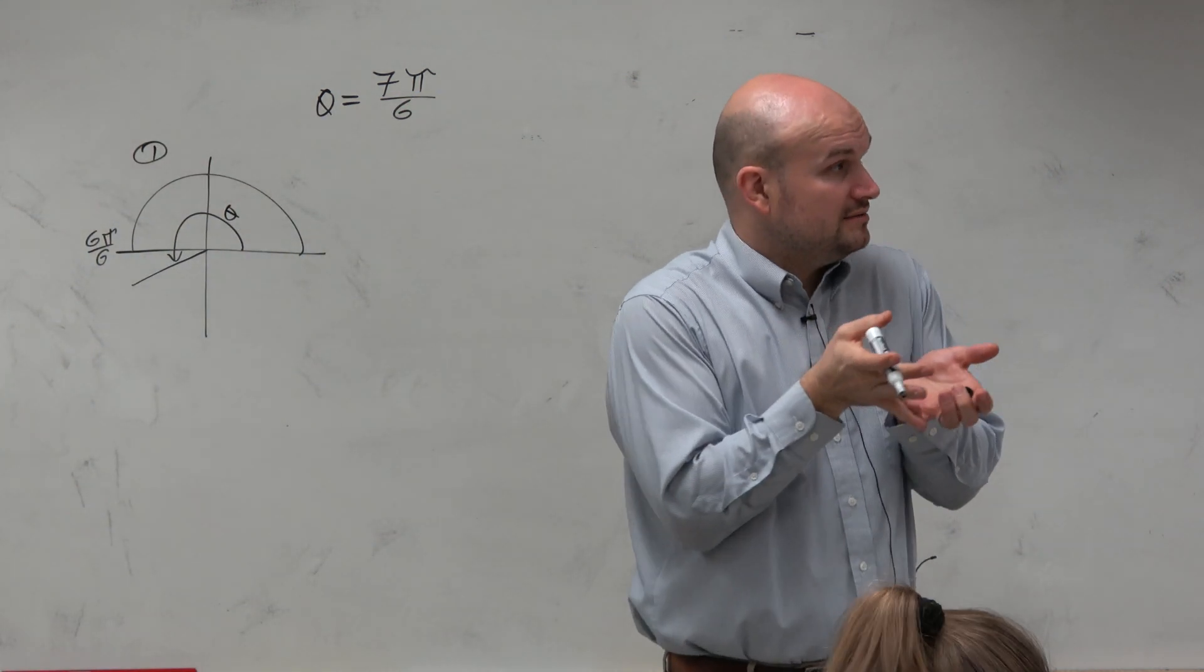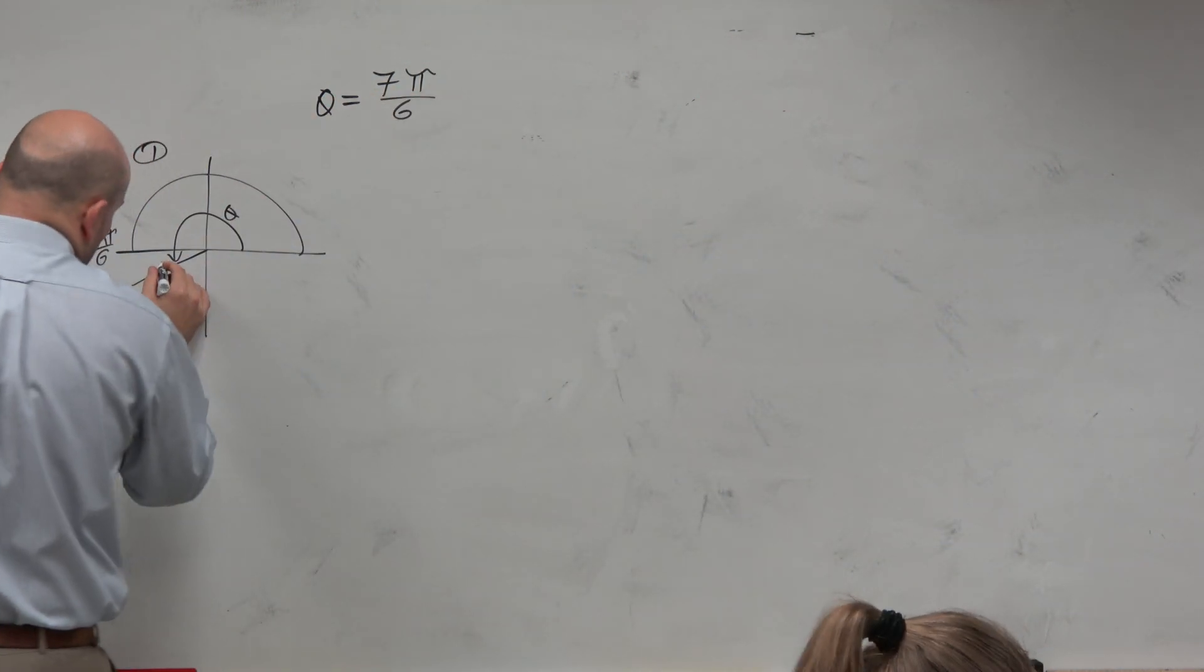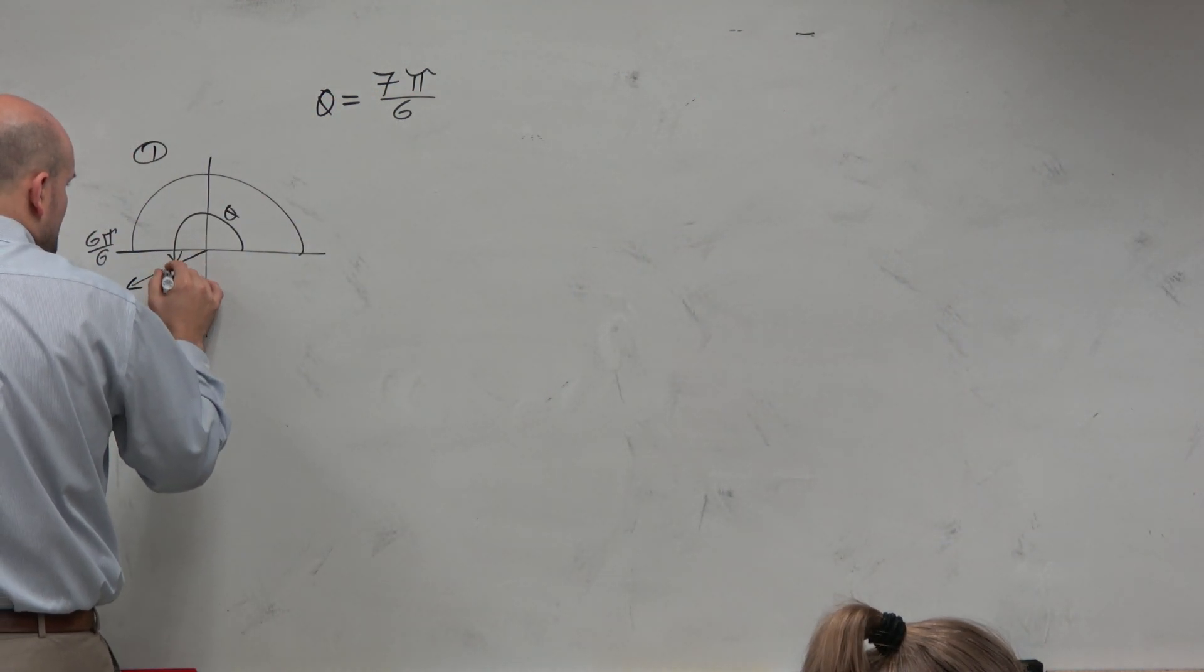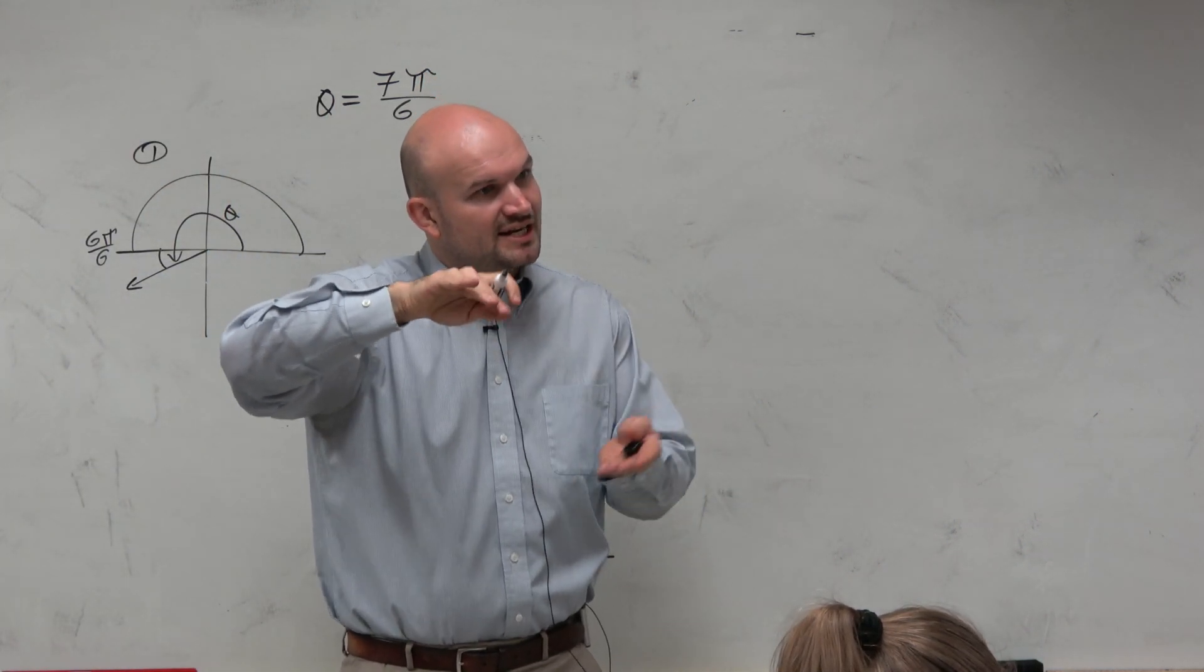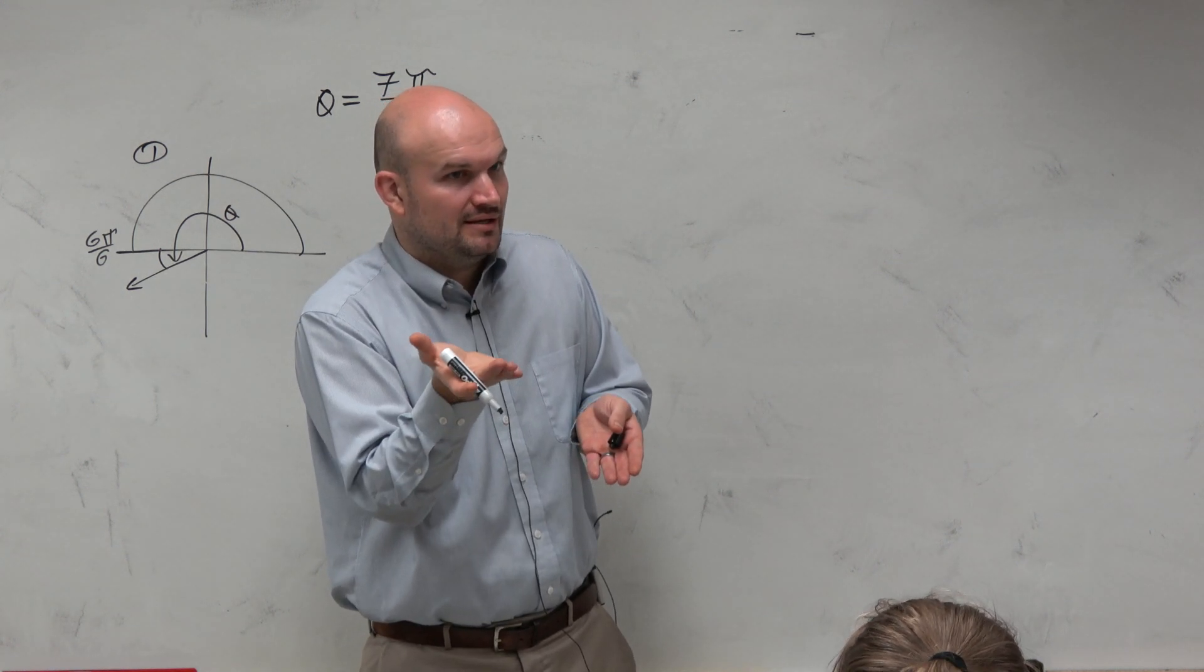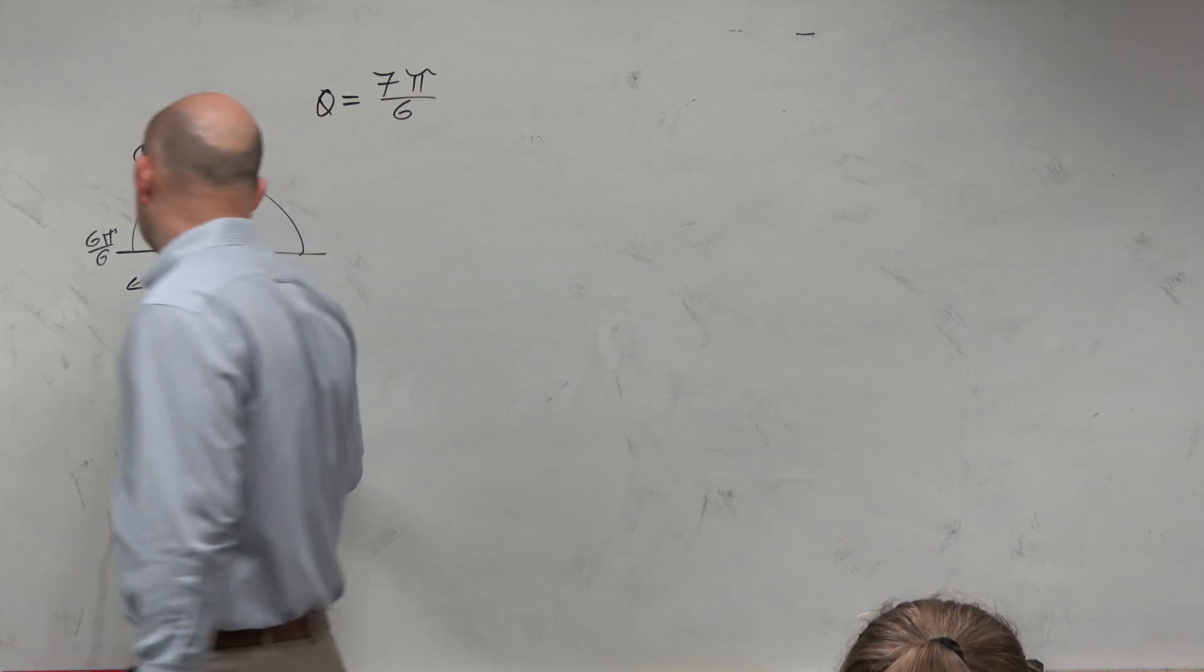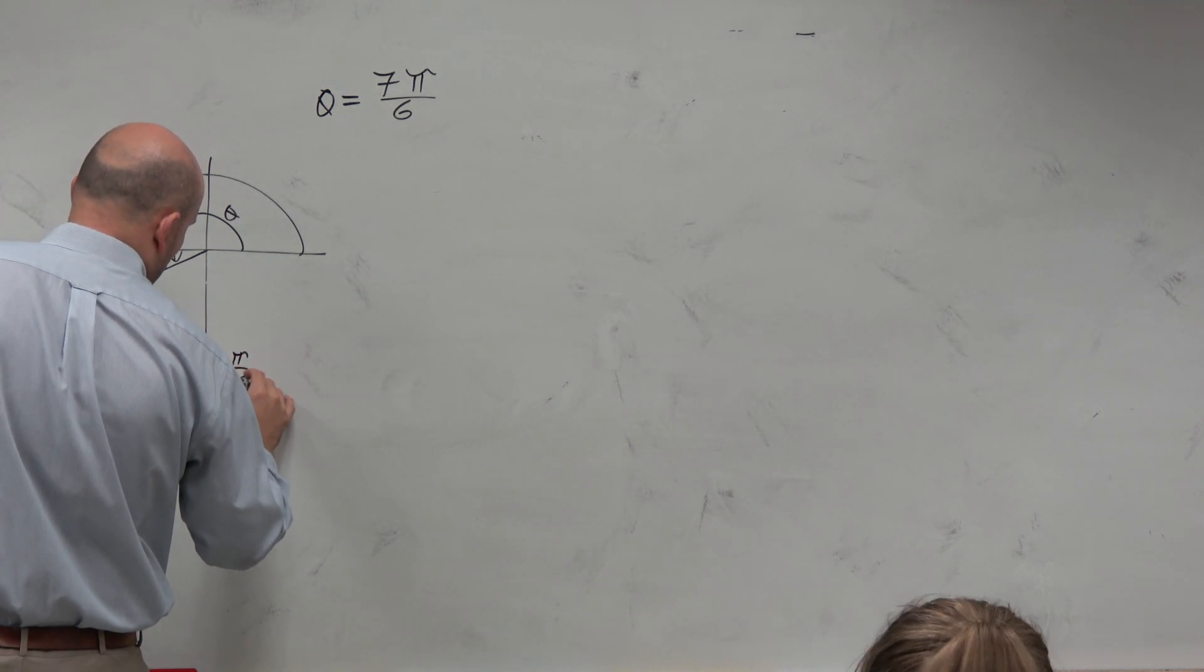Now, the next important thing is I want to determine the reference angle. What is the distance from my terminal side to my x-axis? Well, if I know halfway around the circle is 6 pi over 6 and I just went an extra pi over 6, then that reference angle is going to be pi over 6. So step number two, I'll just write theta prime equals pi over 6.